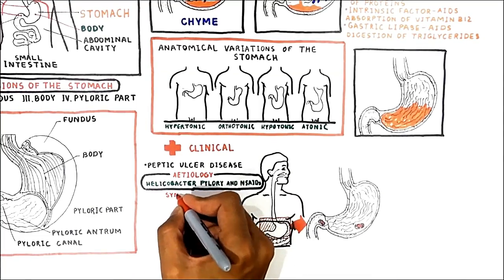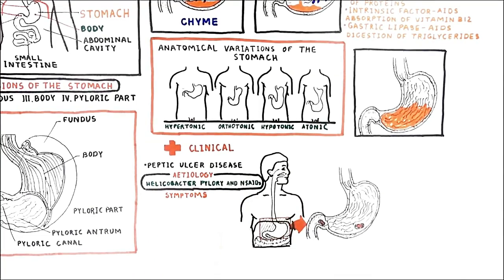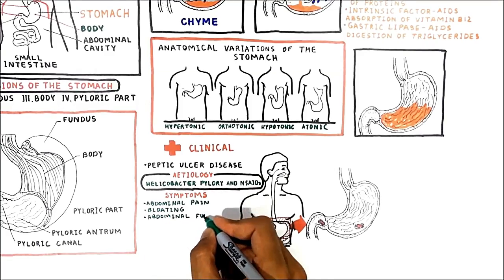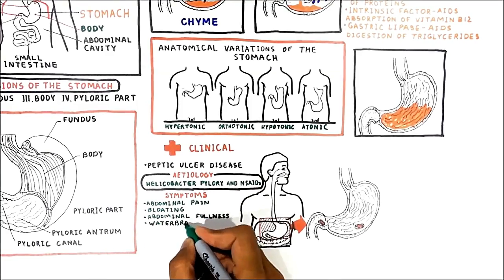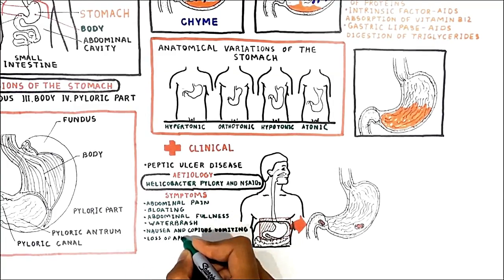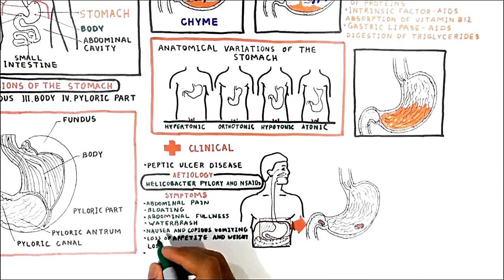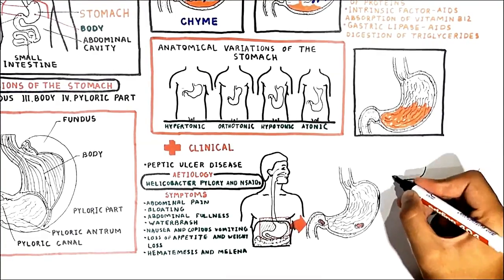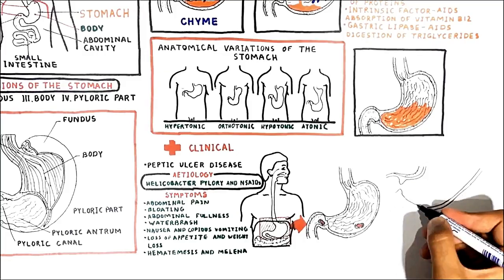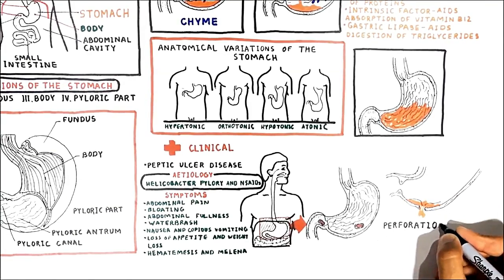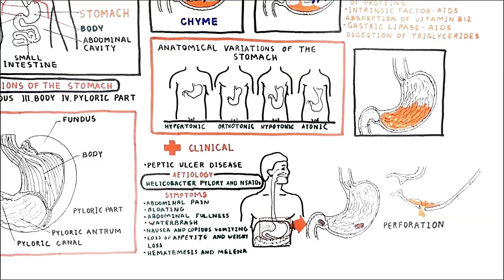Signs and symptoms of a peptic ulcer can include one or more of the following: abdominal pain, bloating and abdominal fullness, water brash, nausea and copious vomiting, loss of appetite and weight loss, hematemesis, and melena. Sometimes an ulcer can lead to a gastric or duodenal perforation, which can quickly lead to acute peritonitis that requires immediate surgery.